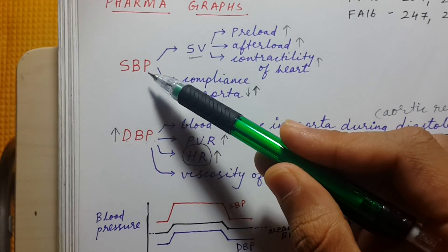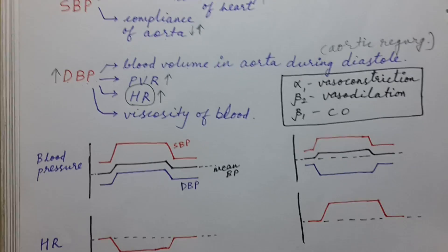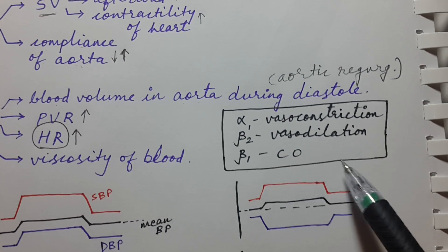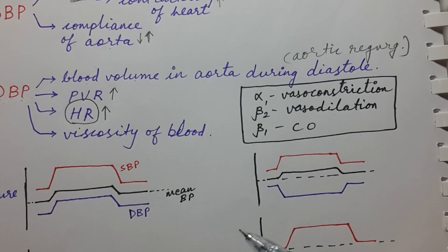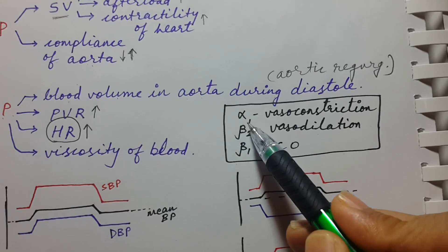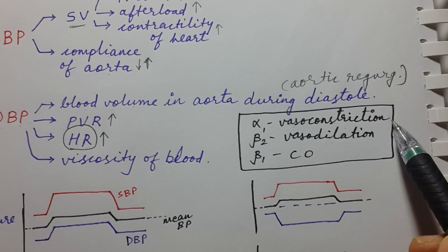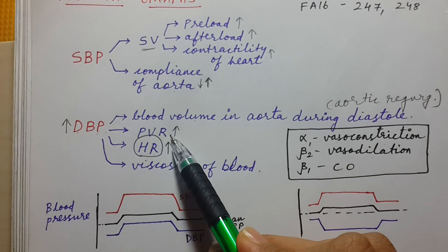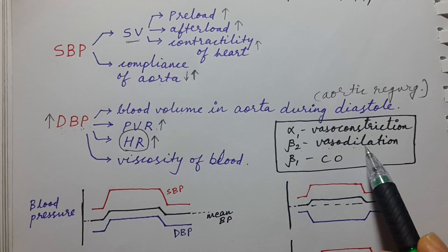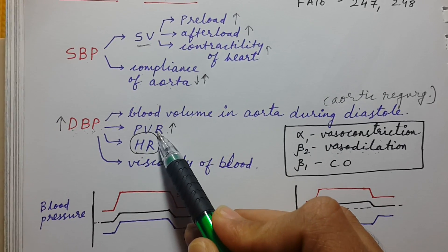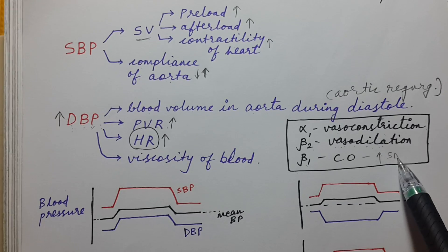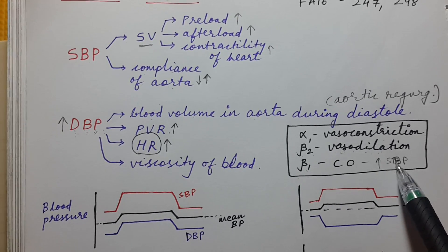Before starting the graphs, let's simplify receptor functions. Alpha-1 causes vasoconstriction, increasing peripheral resistance and diastolic blood pressure. Beta-2 causes vasodilation, decreasing peripheral vascular resistance and diastolic blood pressure. Beta-1 increases cardiac output and tries to increase systolic blood pressure, which mainly depends on stroke volume rather than cardiac output.